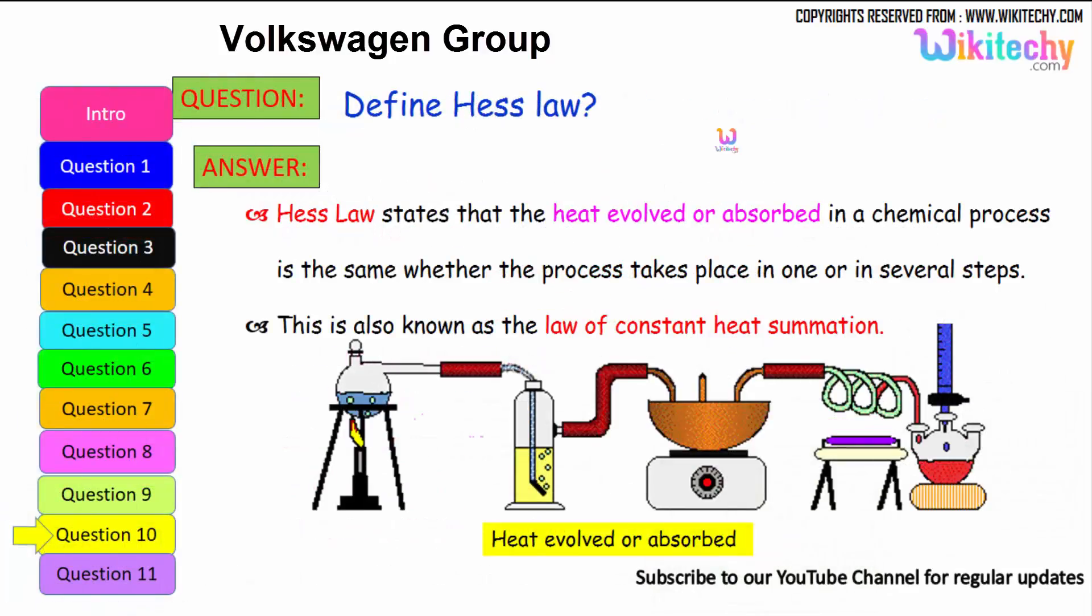Define Hess's law. This is a very important question. In case of generating heat between an object in emissions, Hess's law states that the heat evolved or absorbed in a chemical process is the same whether the process takes place in one or in several steps. This is also known as the law of constant heat summation.